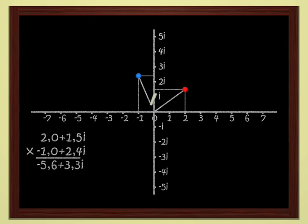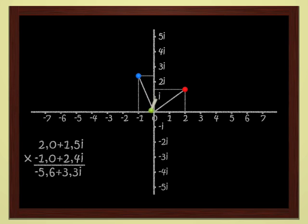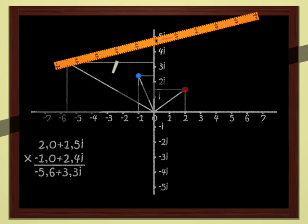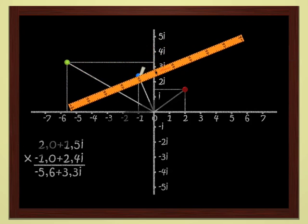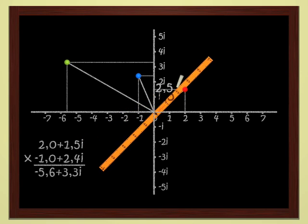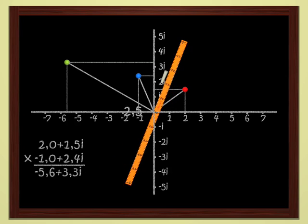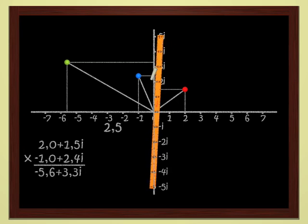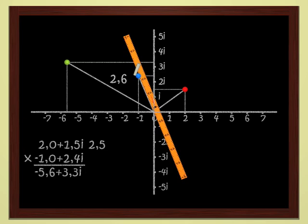It seems the right time to define two notions, the modulus and the argument of a complex number. The modulus of a complex number z is just the distance from the origin to the point that represents z in the plane. Let's use the ruler to determine the modulus of the red point, which is 2 plus 1.5i. Let's see. It measures 2.5. The modulus of 2 plus 1.5i is therefore 2.5.